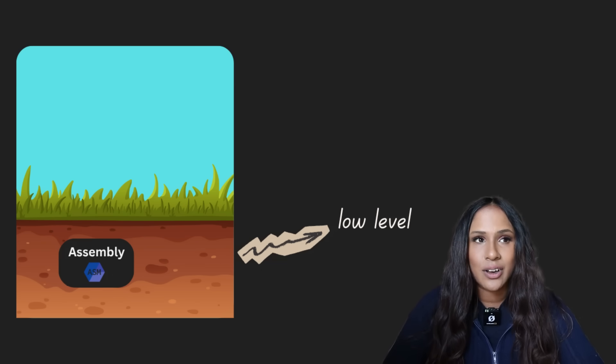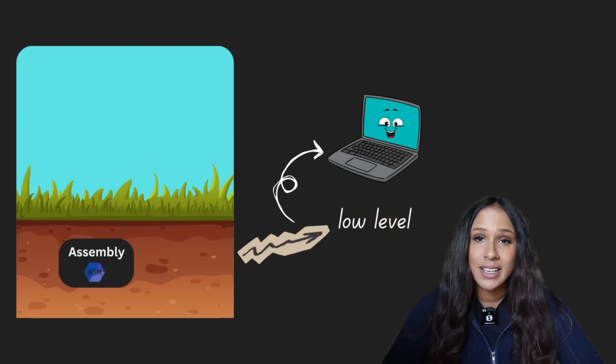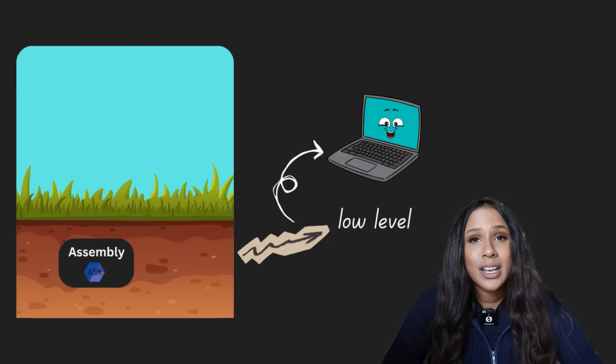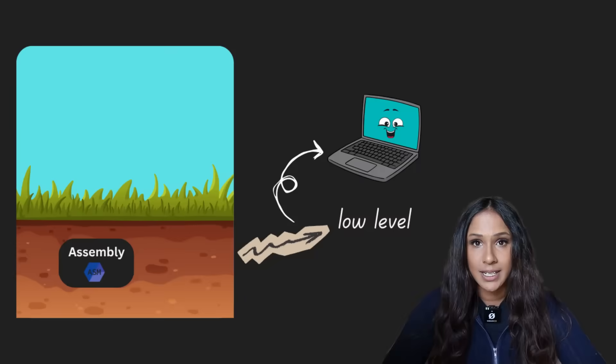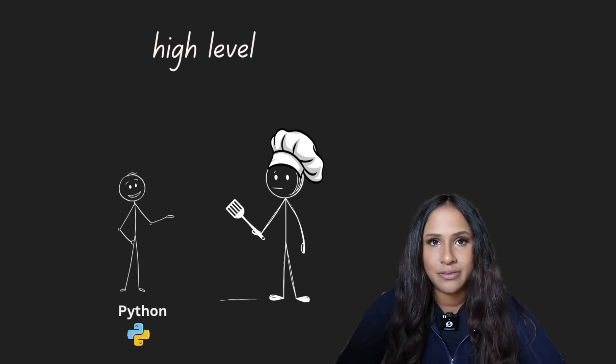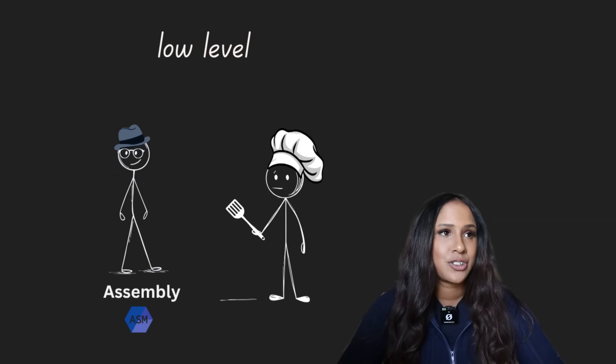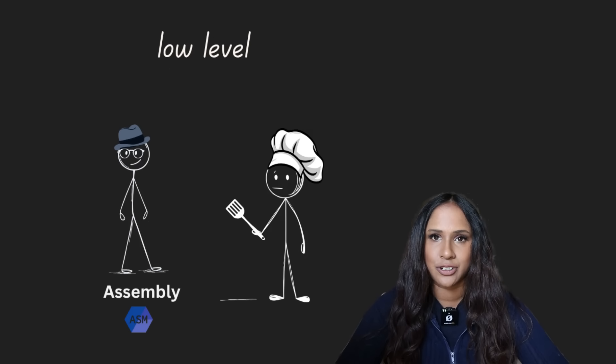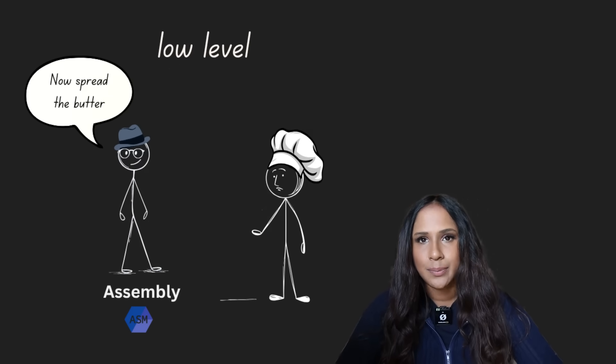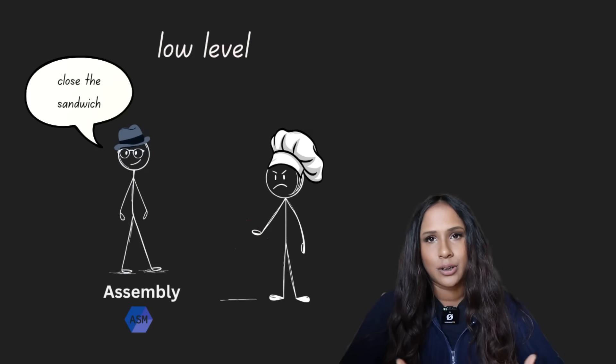Low-level languages, on the other hand, are designed for the machine. Assembly is one of them. They don't care about readability or convenience. They care about talking directly to the hardware, the CPU, the memory, the registers. A high-level language is like telling the chef, make me a sandwich, whereas a low-level language is giving step-by-step instructions. Pick up the bread, spread the butter, put the cheese in, close the sandwich.